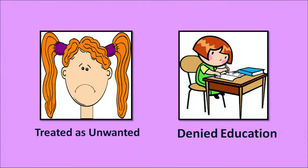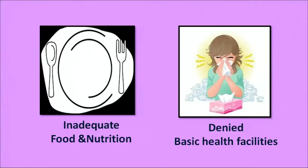Girls are treated as unwanted children in the family. They are not given enough opportunities for education — they are denied education. They need good nutrition but are not given enough food to eat, so there is inadequate food and nutrition in different developmental cycles. They are also not given proper health care when they are sick, and are denied basic health facilities.